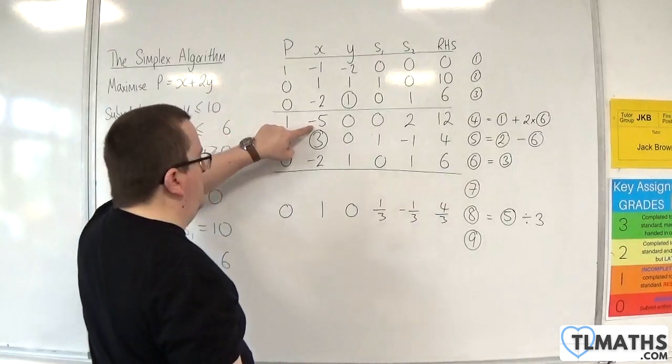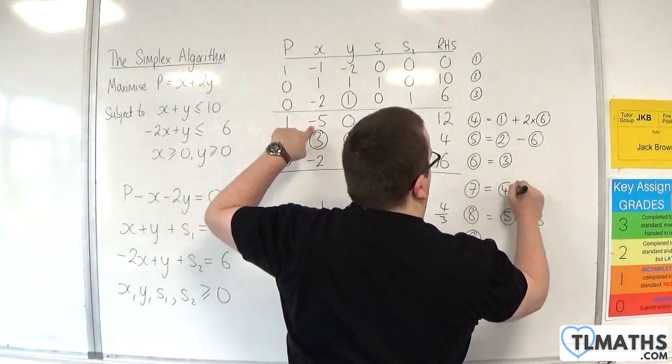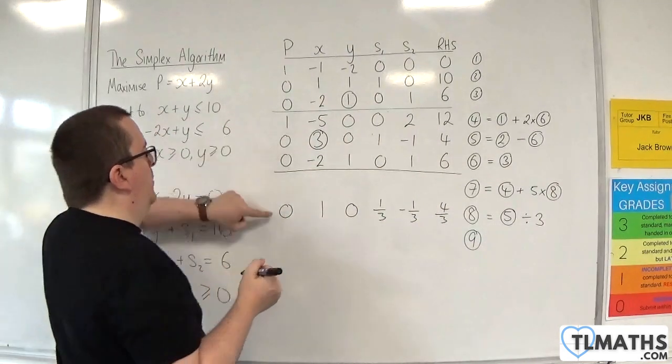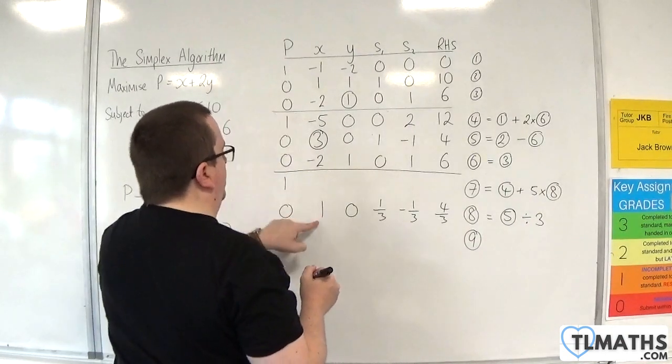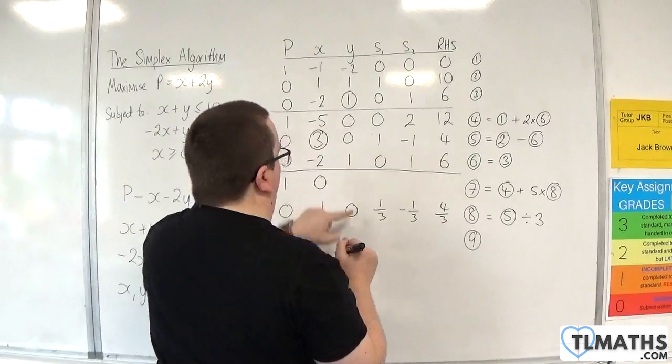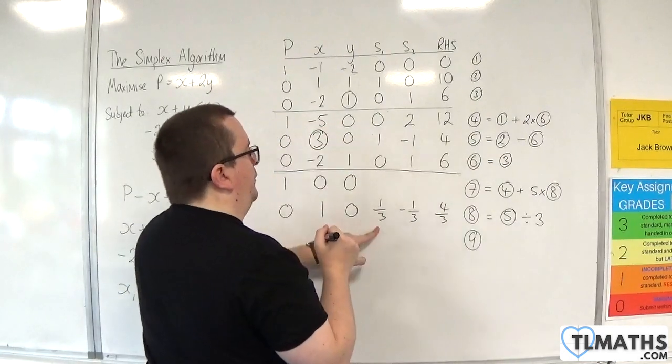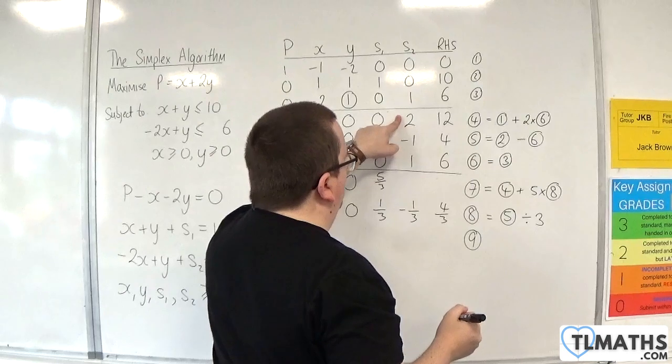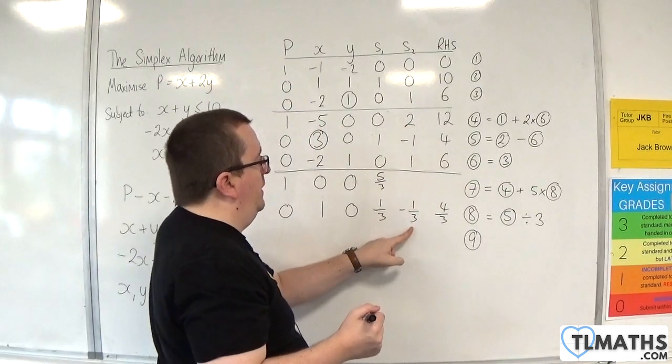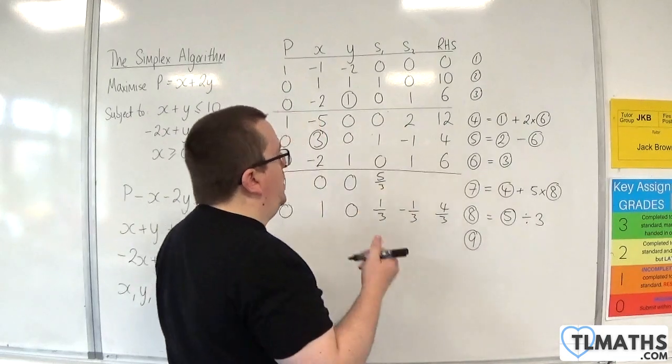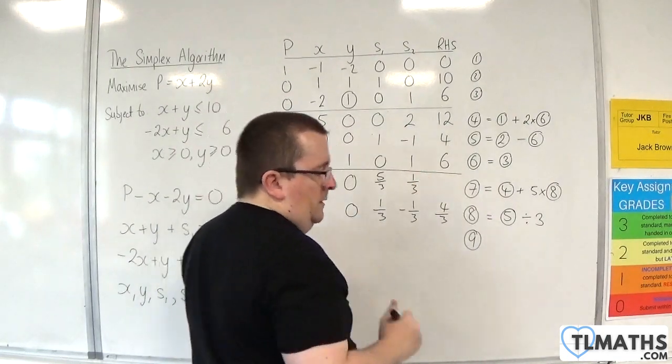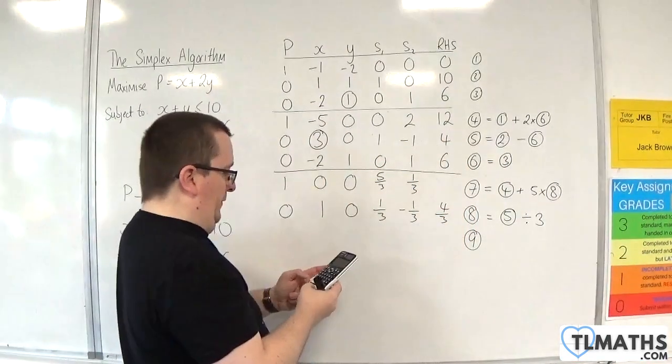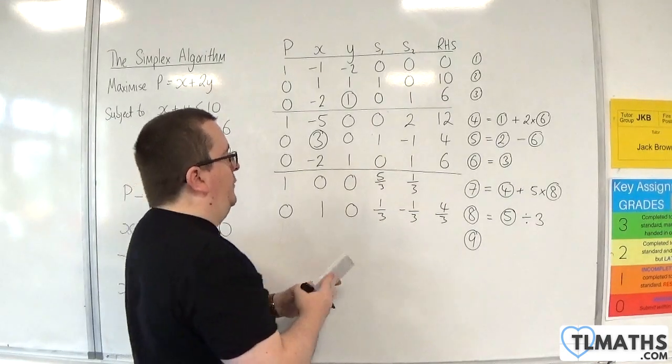Then I need to get rid of that minus 5. So I'm going to do row 4 plus 5 lots of row 8. So 1 plus 5 lots of 0. Minus 5 plus 5 lots of 1 is 0. 0 plus 5 lots of 0 is 0. 0 plus 5 lots of a third is 5 thirds. Then we've got 2 take away 5 thirds. Well, that's 6 thirds, so take away 5 thirds will leave me with 1 third. Now I'm just going to have to end up using the calculator. We've got 12 plus 5 lots of 4 thirds. And that's 56 thirds.